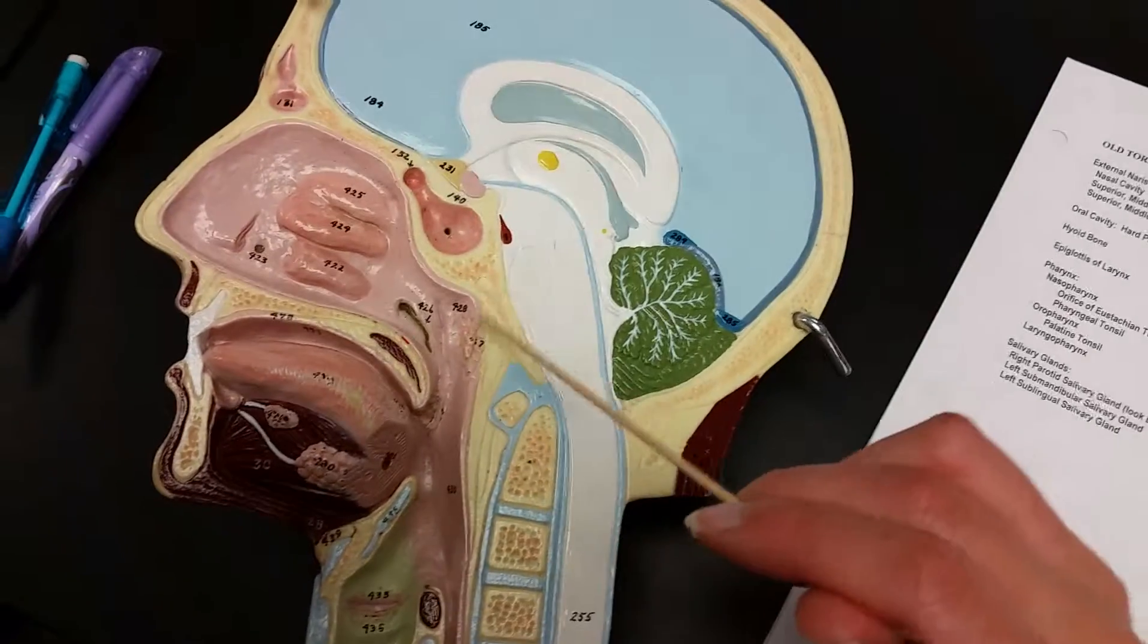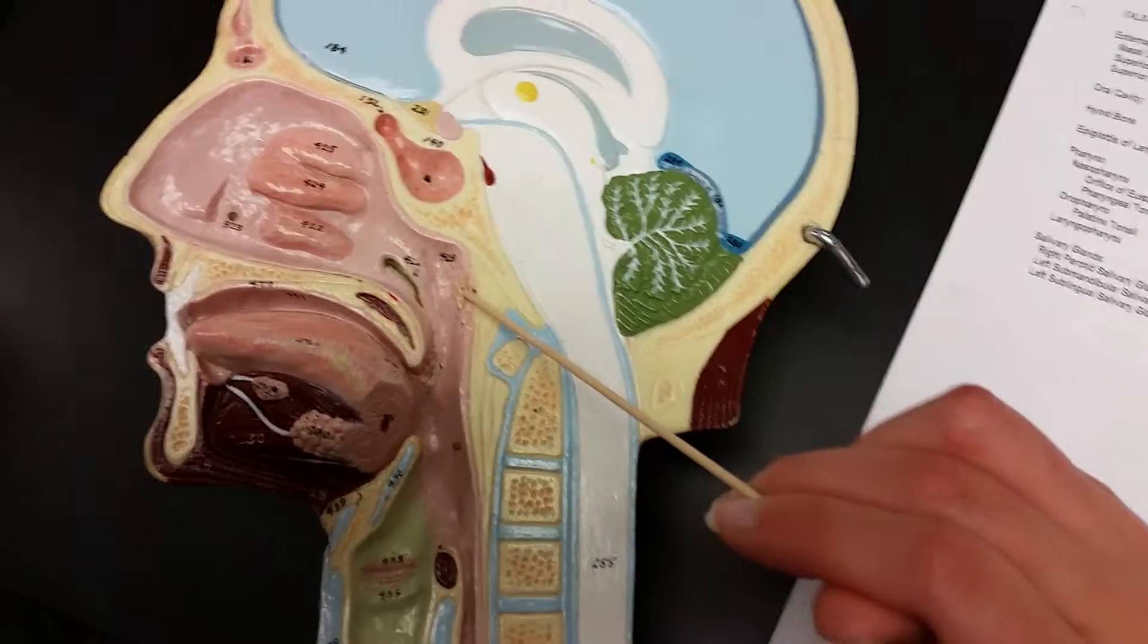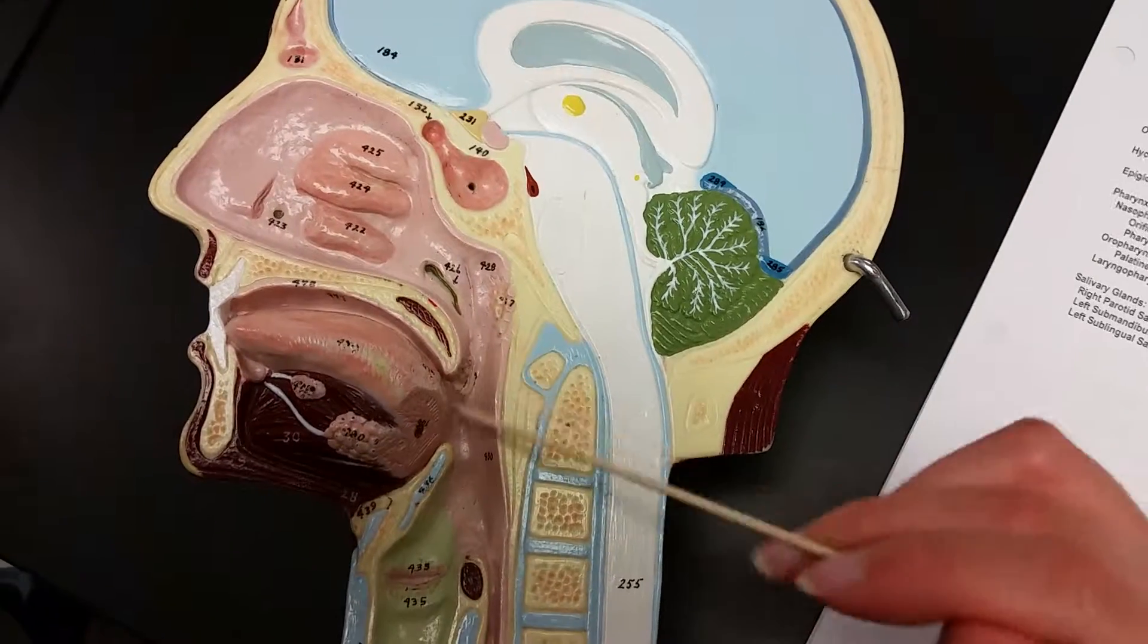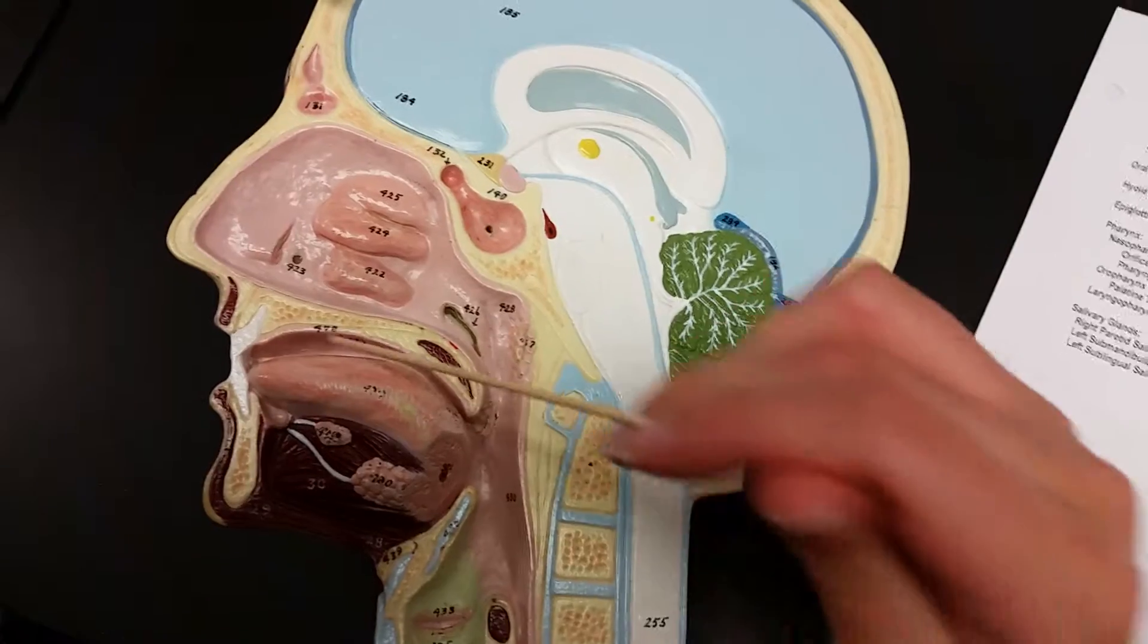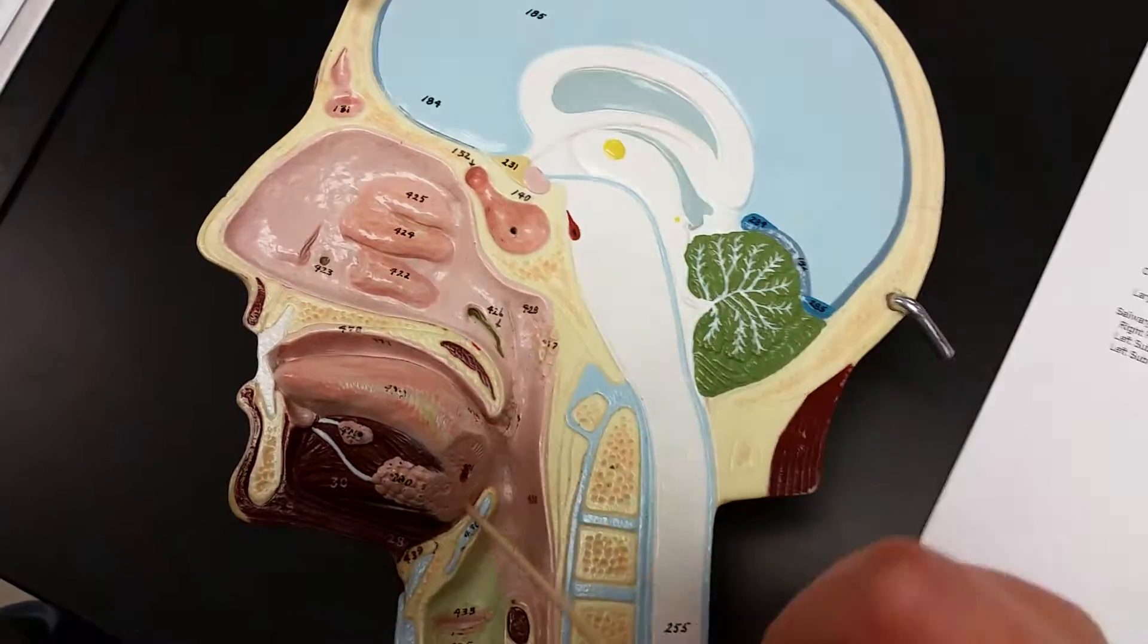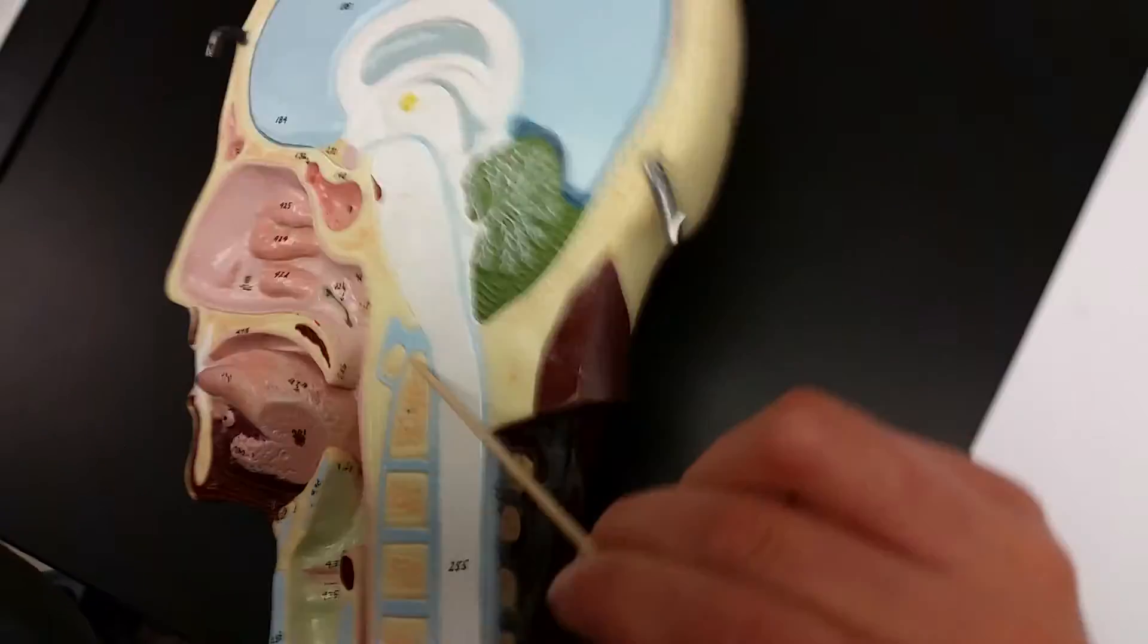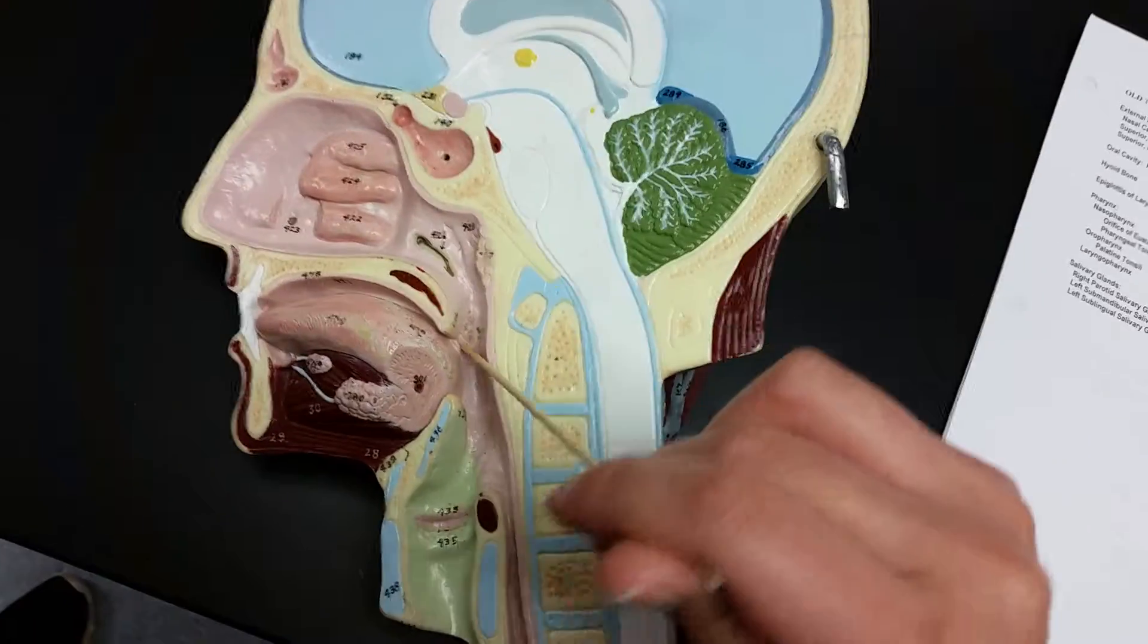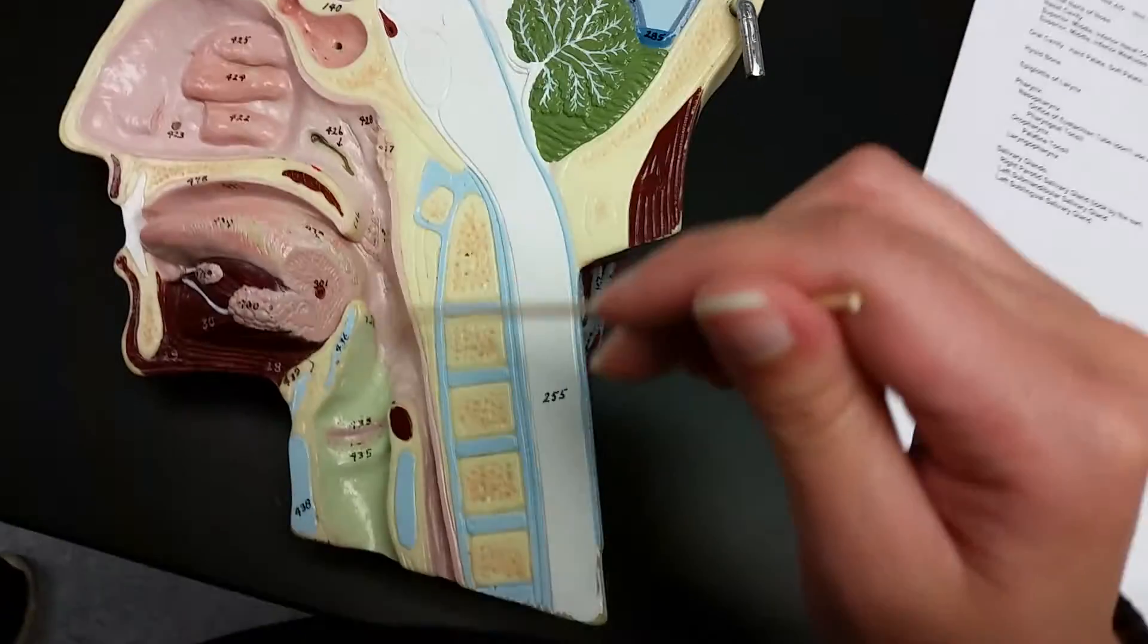Pharyngeal tonsil would be this. Orifice of larynx would be here. Palatine tonsil would be here. No, this here. Palatine tonsil. Laryngeal pharynx would be here.